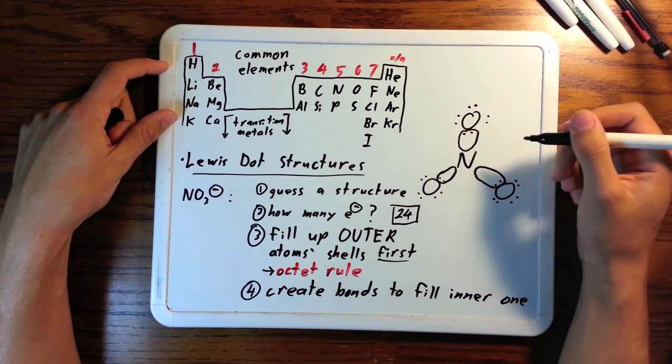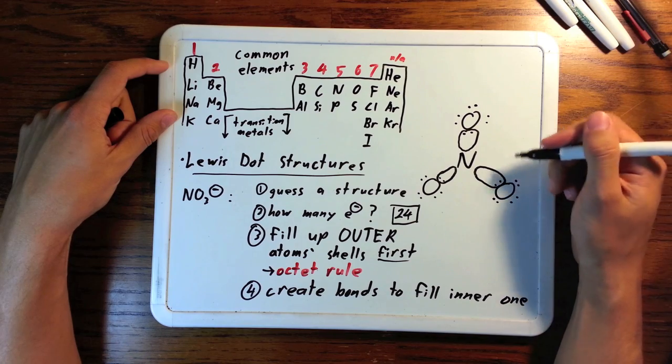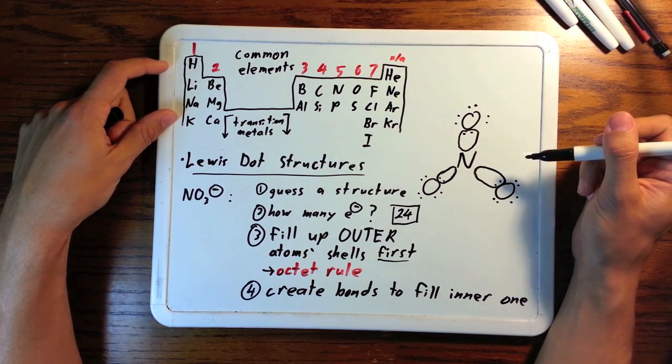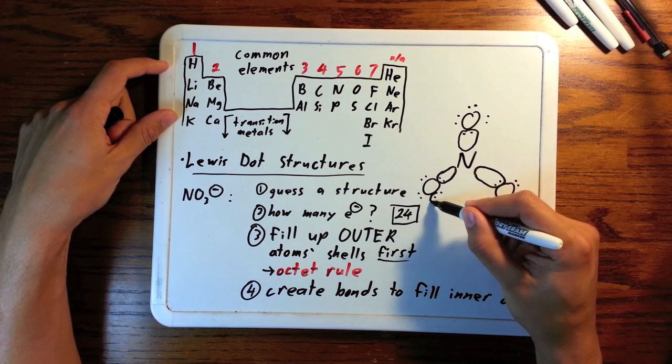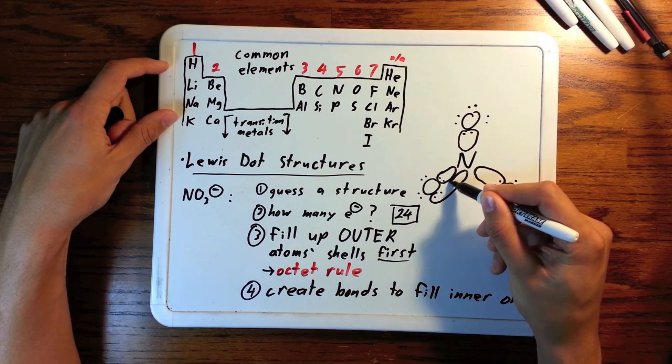So, with this, nitrogen has 6 electrons, just from its 3 initial bonds. And then, we know nitrogen wants 8 for an octet. We'll give it 2 more by creating another bond. Now, it looks like this.